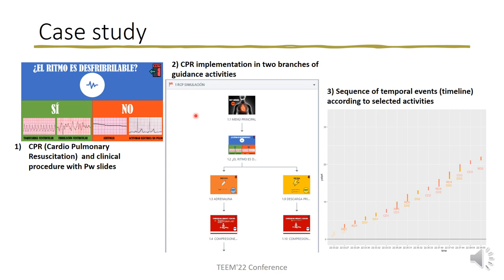Next, the PowerPoint presentation has been imported through the Articulate platform to label the different presentation slides and configure the events associated to these — for example, two branches of guidance activities in the clinical procedure. The final presentation using Articulate has been exported or published to a SCORM format, which was stored in the SCORM cloud platform.